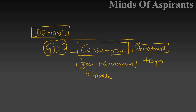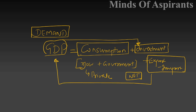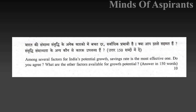The next component is net exports — exports minus imports. When you produce a T-shirt, it may be exported to foreign countries, and many components will also be imported. So export minus import gives you an analysis of the final output of the economy. That is the whole formula for GDP from the demand side.